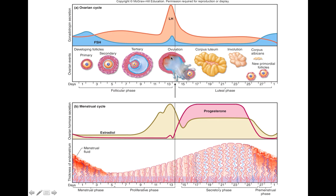The reason that ovulation occurs is because of a spike in LH — luteinizing hormone. You see this big spike right before the ovulation line, which takes place around day 14 of a 28-day cycle. So the egg, the oocyte, is released from the follicle.